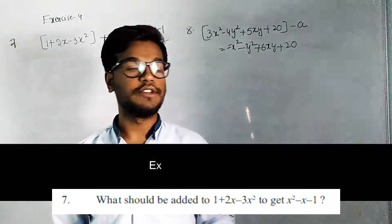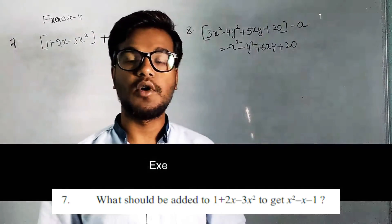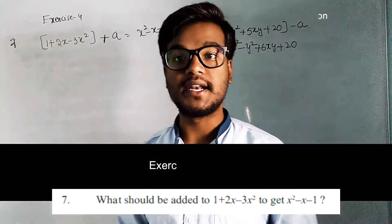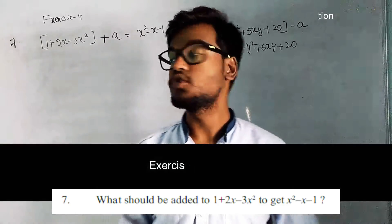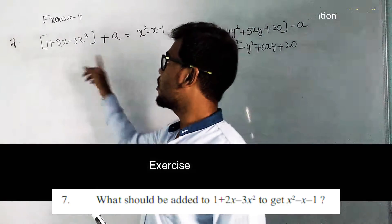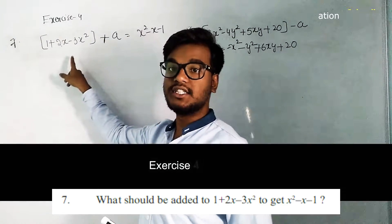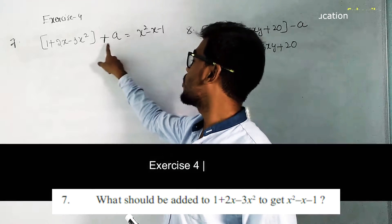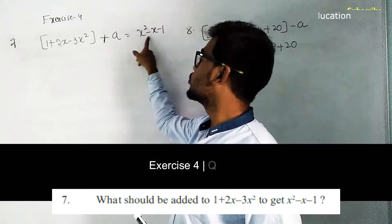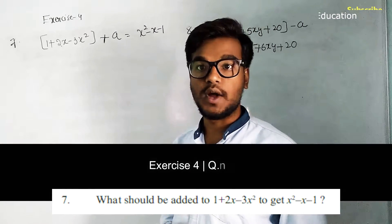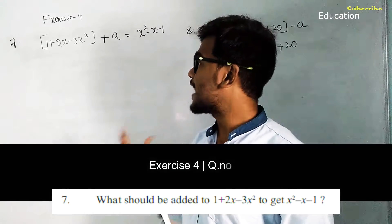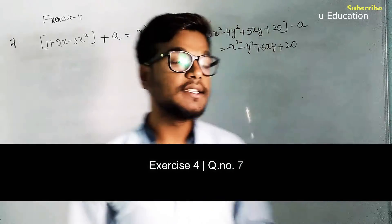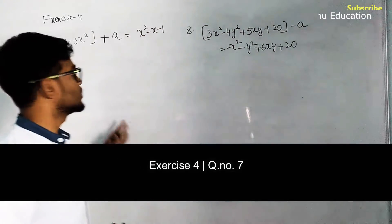In this module we are going to discuss the solutions for the 7th and 8th questions. The 7th question is: what should be added to 1 + 2x - 3x² in order to get x² - x - 1? Let's take that expression to be added as 'a'.